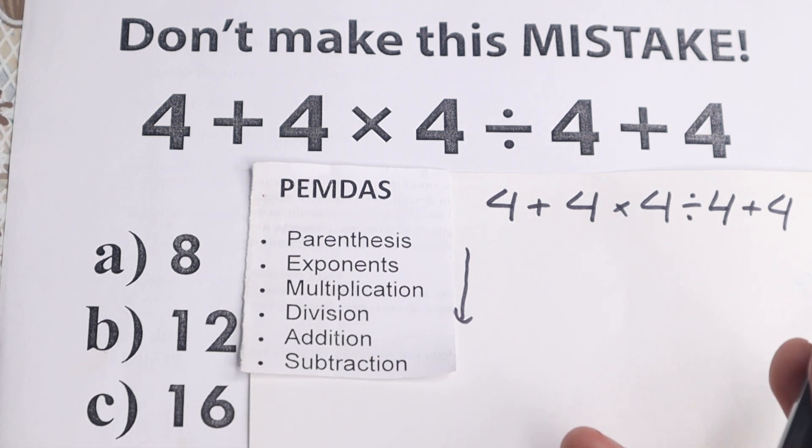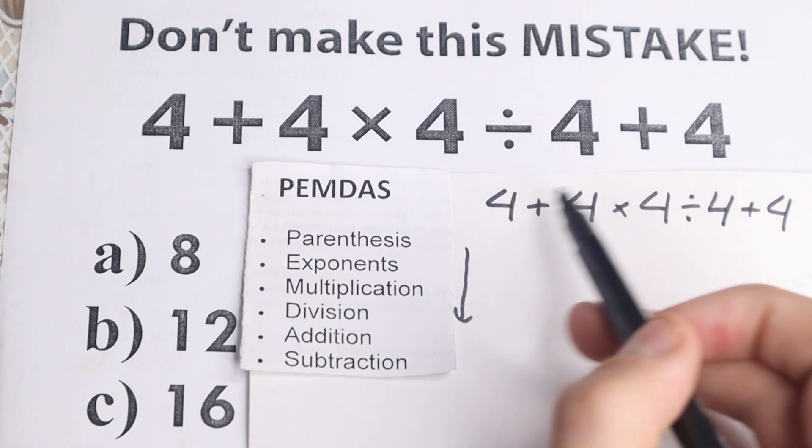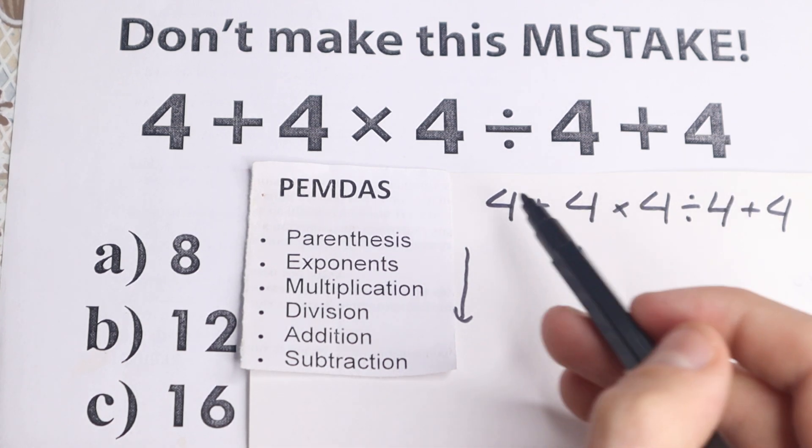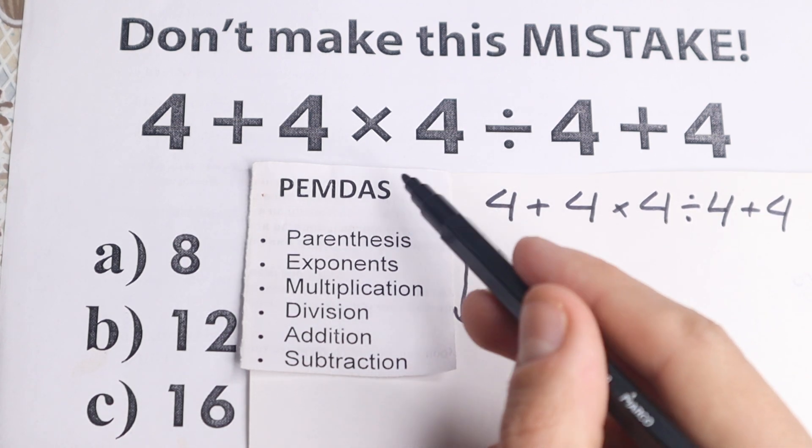So 8, 12 or 16, we will check our answer. So you can easily write your option down in a comment section. Because obviously whatever order we select is going to create a different answer, right? So we need to understand what is the correct order to do this problem. So what if this is our order?